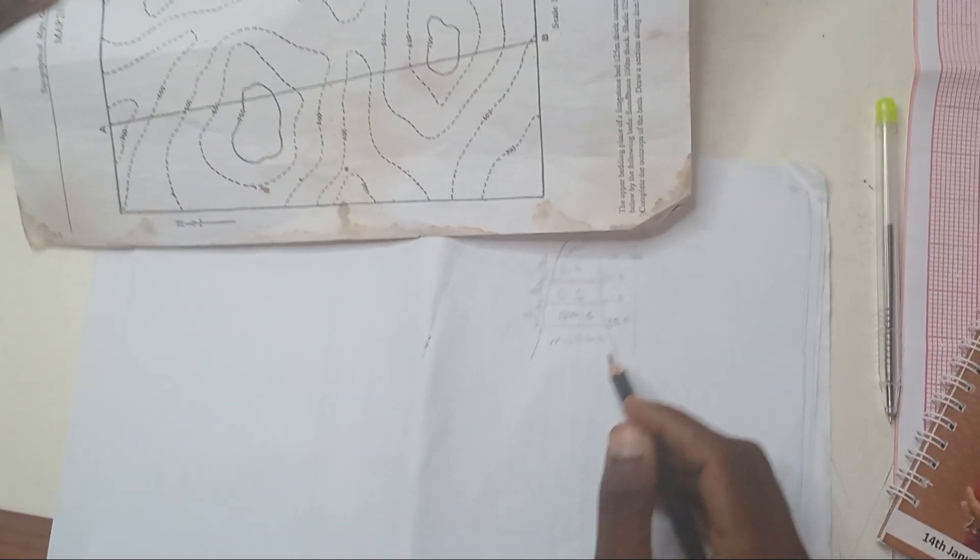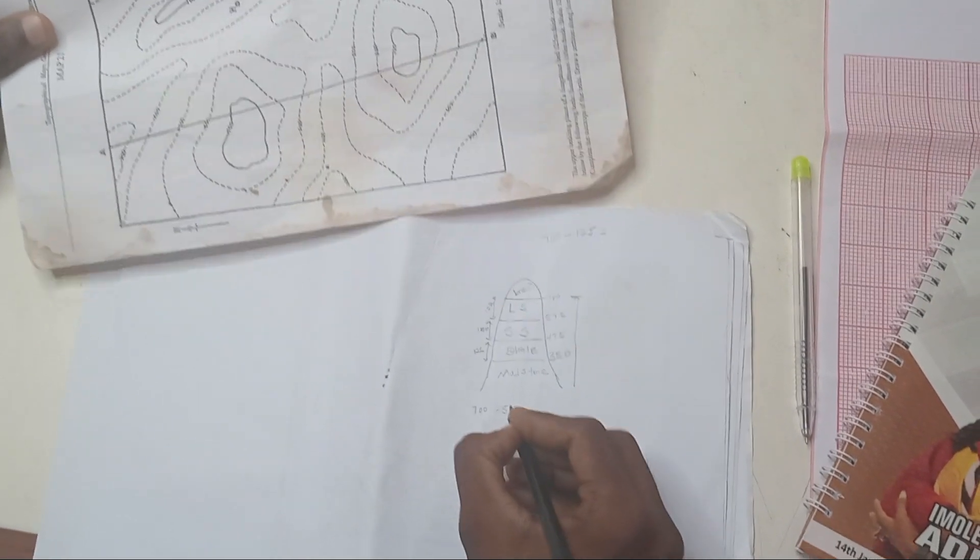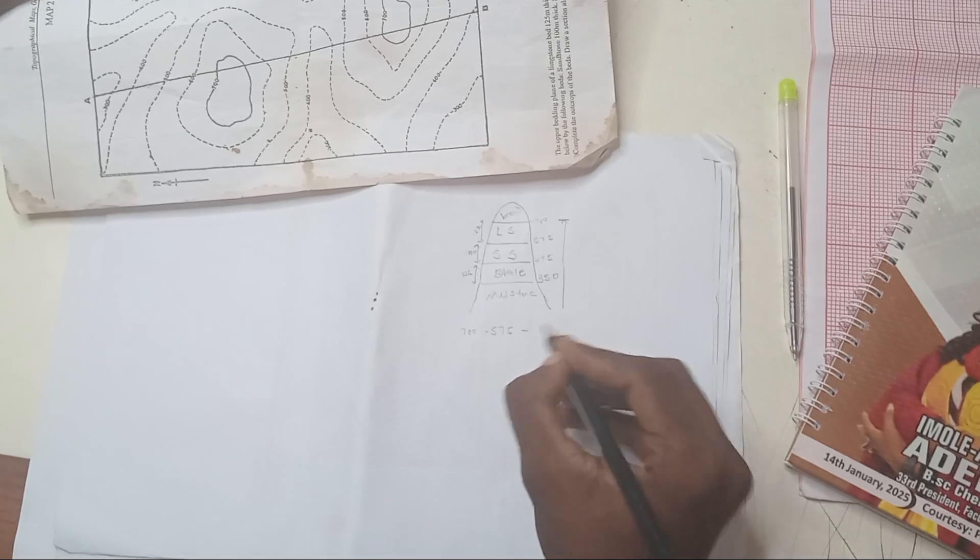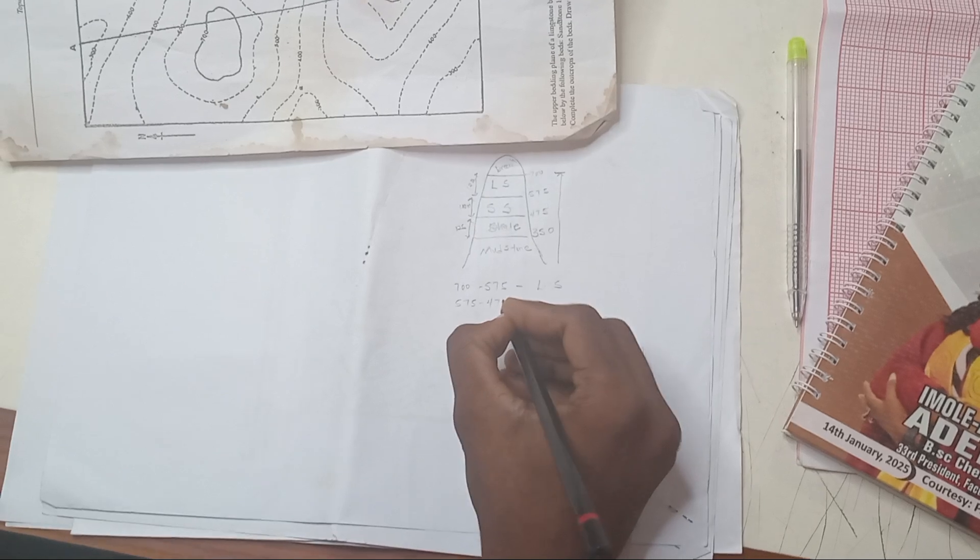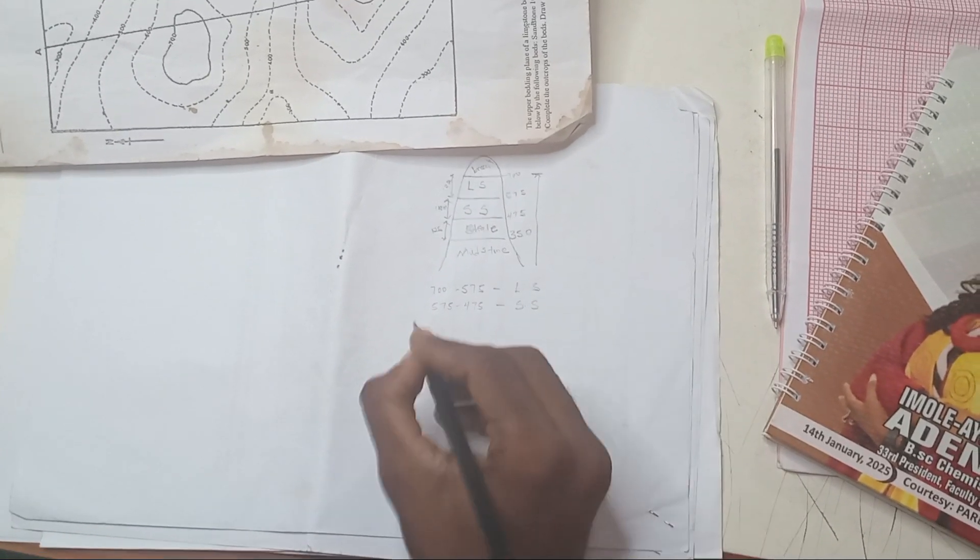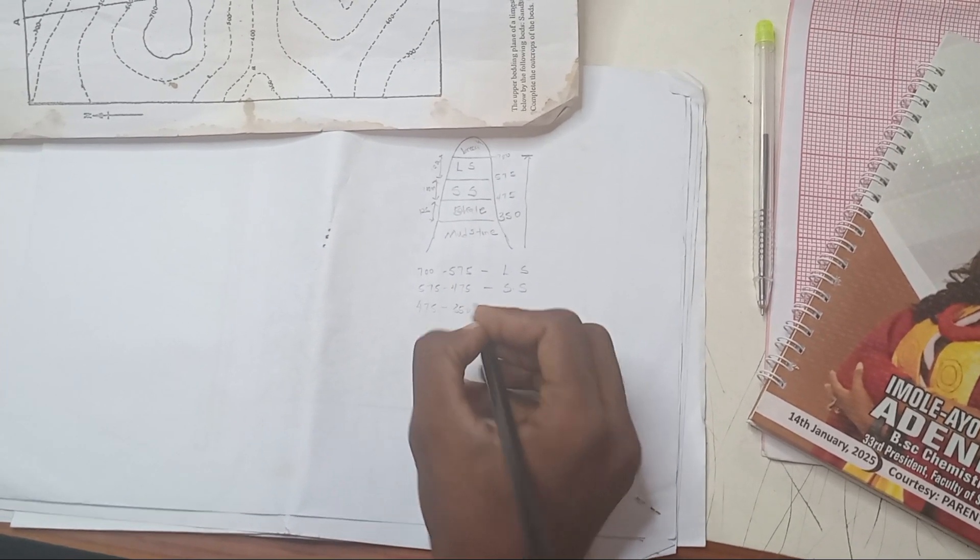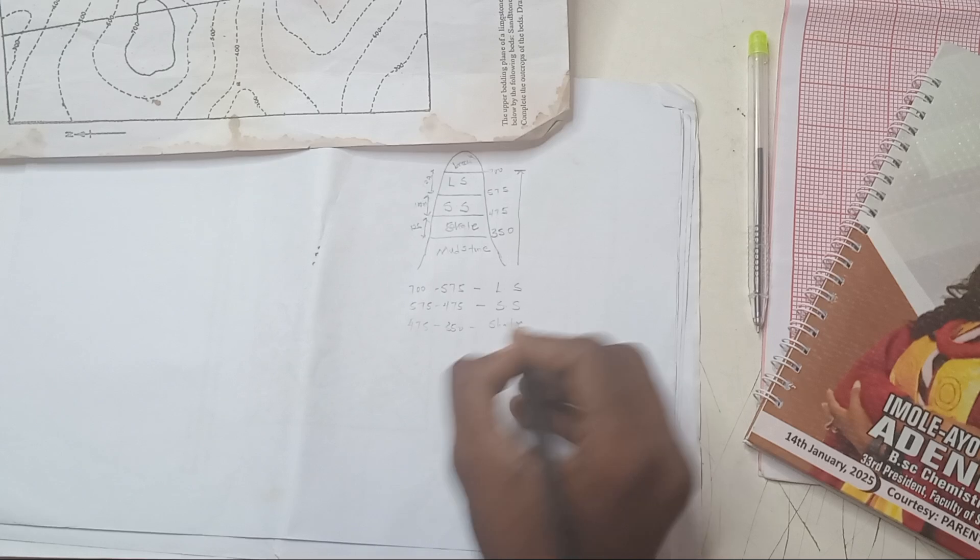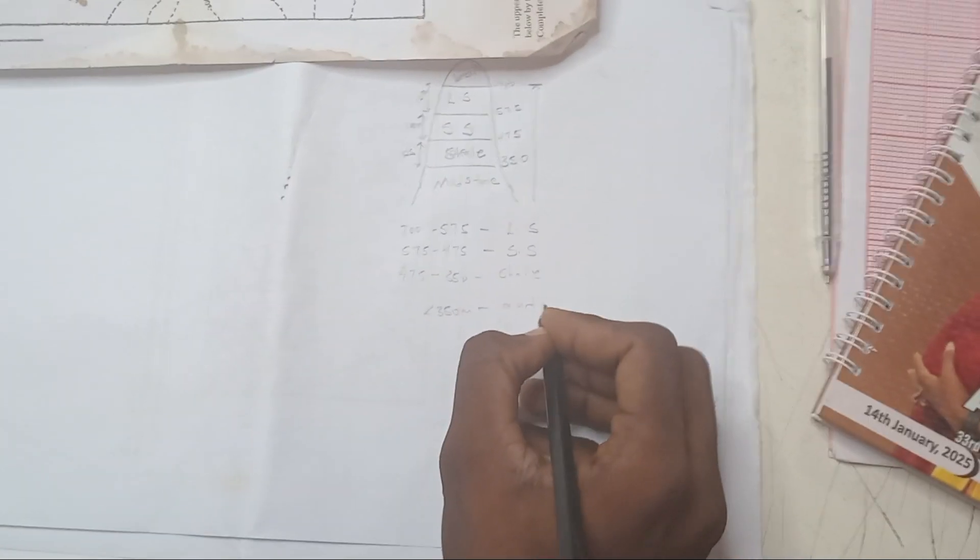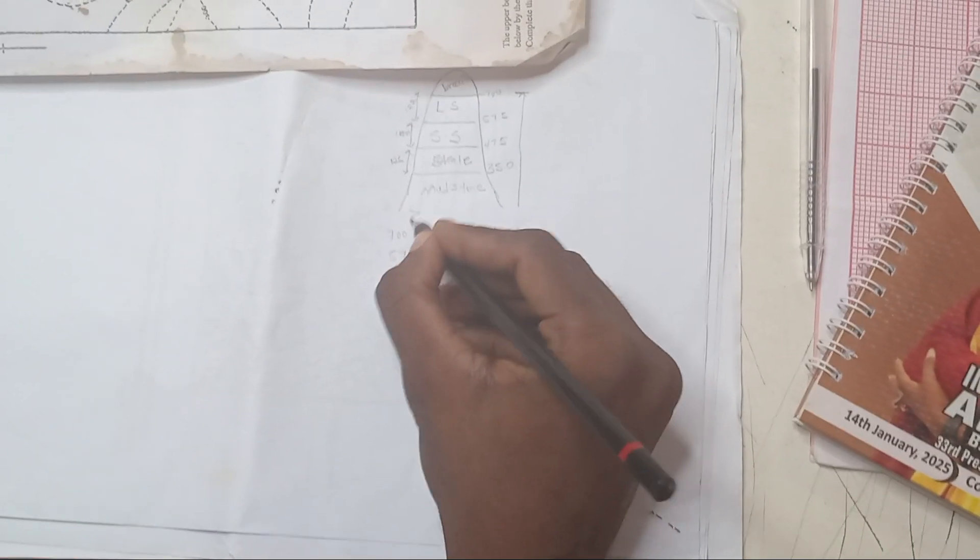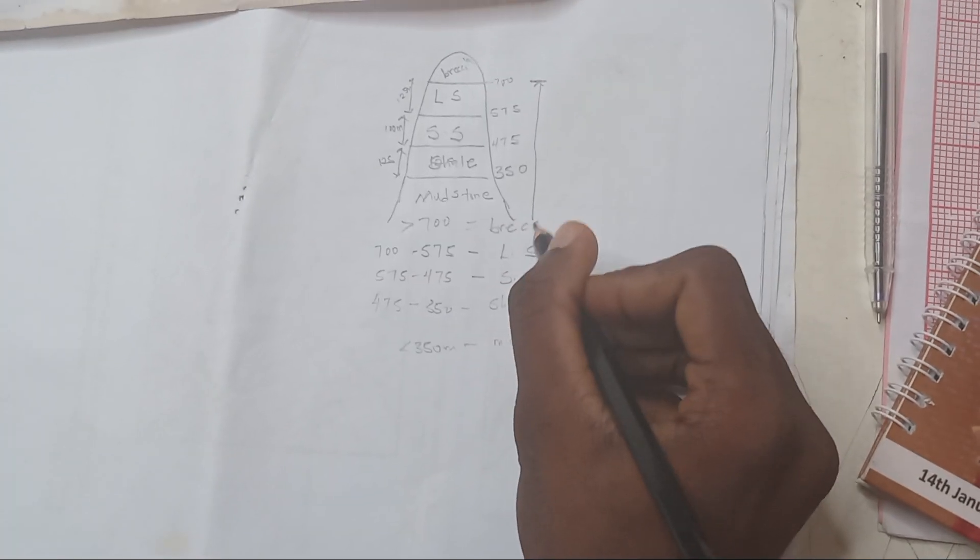I mean a geological map. So which means what we are working with: from 700 to 575, we have limestone. From 575 to 475, we have sandstone. From 475 to 350, we have shale. And less than 350 meters, we have mudstone. And above that, above 700, greater than 700 as we have here, we have breccia.